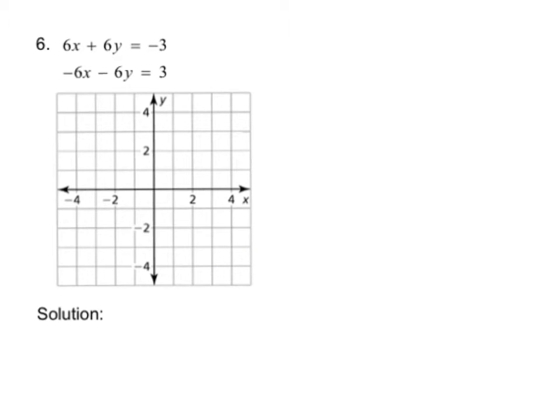In order to graph problem 6, which is 6x plus 6y equals negative 3 and negative 6x minus 6y equals positive 3, the first thing we have to do is solve these equations for y.